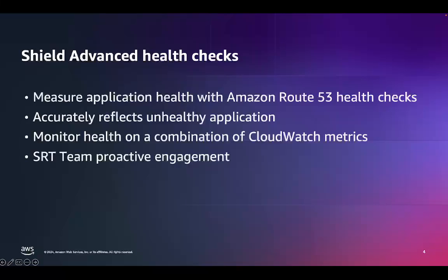Shield Advanced health checks are used to monitor the health of your application origin, such as a Load Balancer, CloudFront Distribution, or EC2 instance. Shield Advanced can use the results of the health checks to determine whether your application is healthy and performing within acceptable parameters. The SRT team engages with you directly if the Amazon Route 53 health check associated with your protected resource becomes unhealthy during an event detected by Shield Advanced.